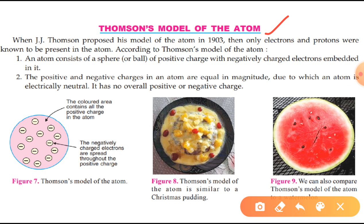In an atom, total positive charge is equal to total negative charge due to the electrons. Now you can see here a picture has been shown to you — have a look. This sphere represents the positive part of an atom, and these electrons are embedded in it.